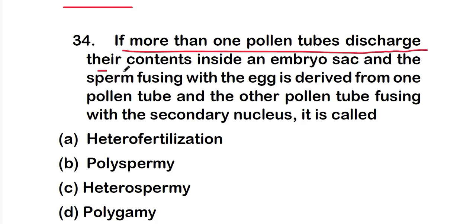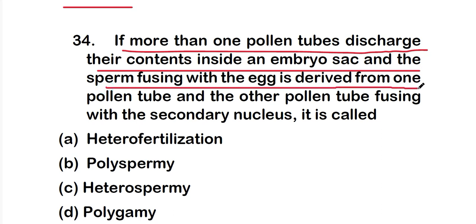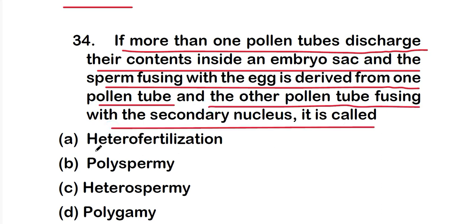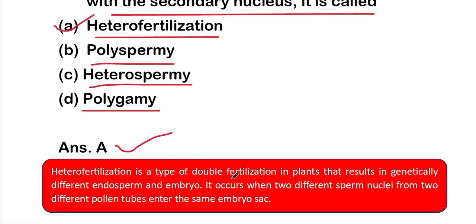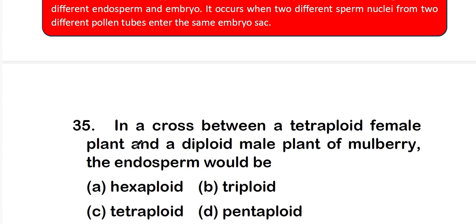Question 34: if more than one pollen tube discharges contents inside an embryo sac, and the sperm fusing with the egg is from one pollen tube while the other pollen tube fuses with the secondary nucleus, it is called option A: heterofertilization; option B: polyspermy; option C: heterospermy; or option D: polygamy. The right answer is option A — heterofertilization, a type of double fertilization resulting in genetically different endosperm and embryo.